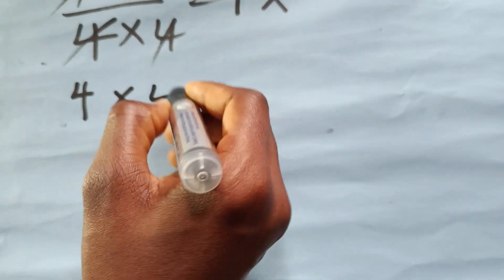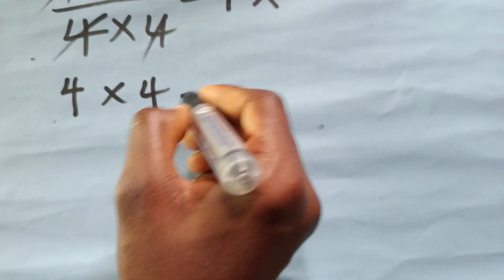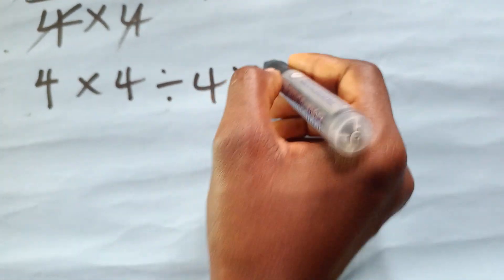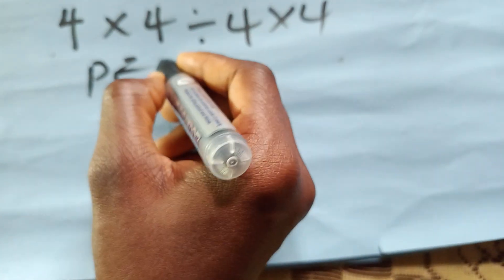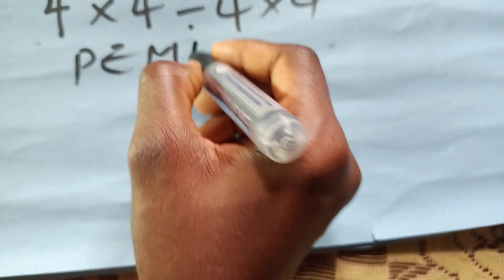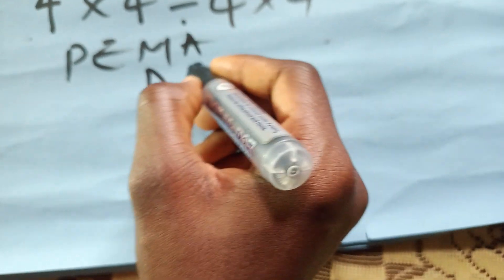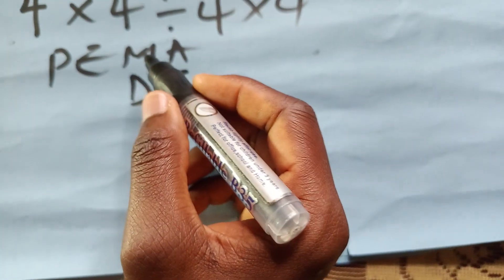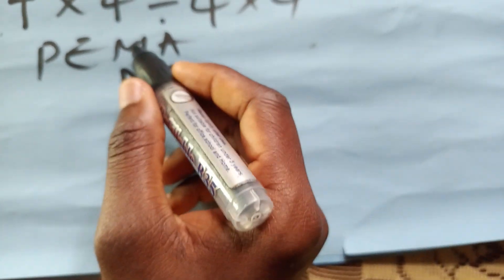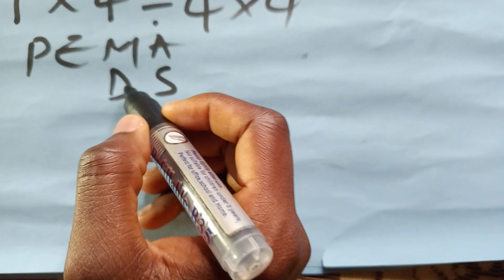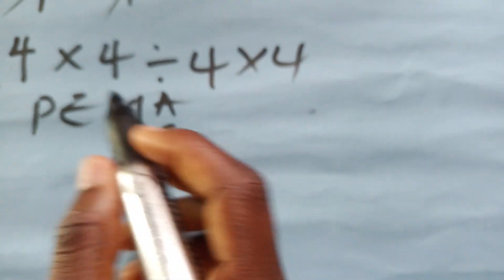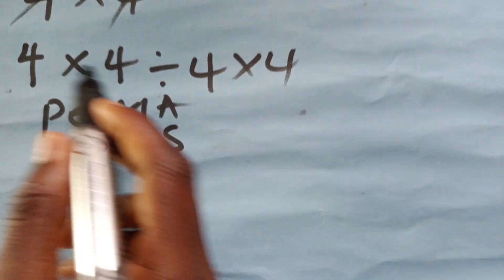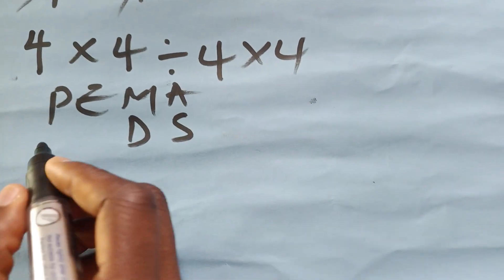Using PEMDAS for four times four divided by four times four: multiplication and division have equal priority, and you have to move from left to right. So looking at our question, that is the rule we apply.